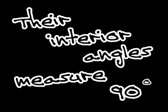Take, for example, rectangle and square. The shapes are different, but properties they share. Just look, and it's easy to see — their interior angles measure 90 degrees.